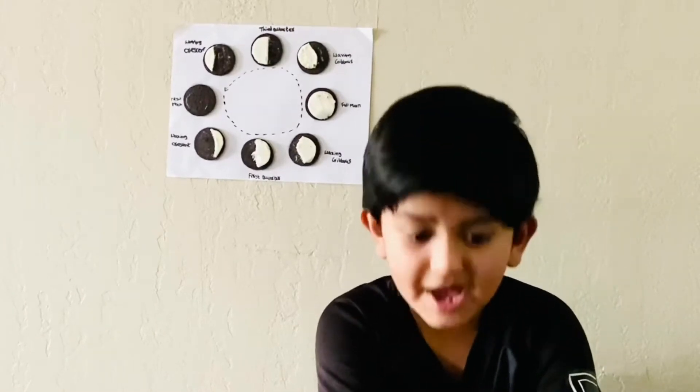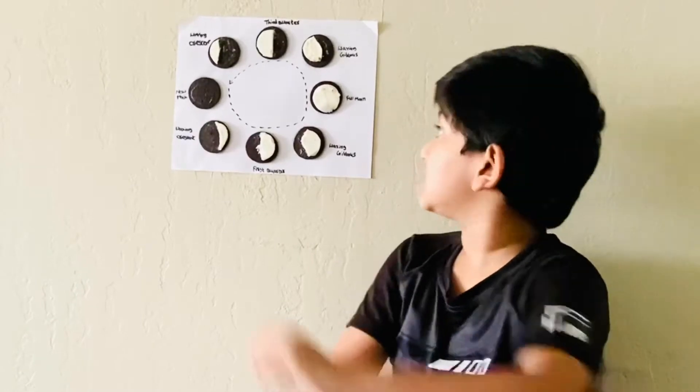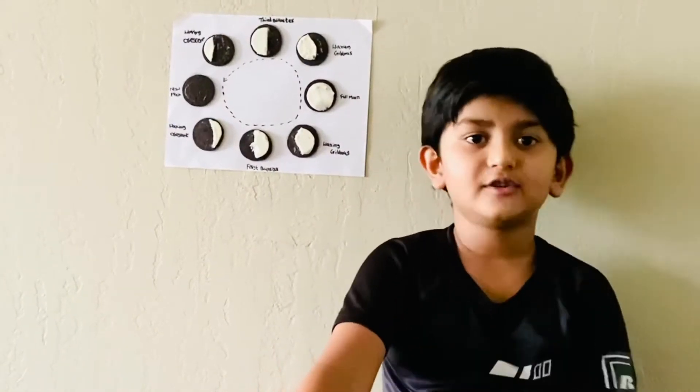And the next stage is Waning Gibbous. It's less appears in the dark. The next stage is Third Quarter. Another word means Final Quarter.